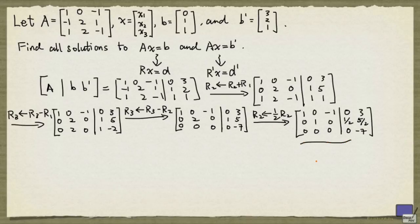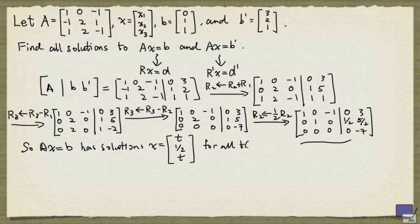If we look at this part, we can see that there is going to be infinitely many solutions, because x3 is going to be a free variable. So the system Ax equal to b has solutions x equals t, one-half, t, for all real numbers t.